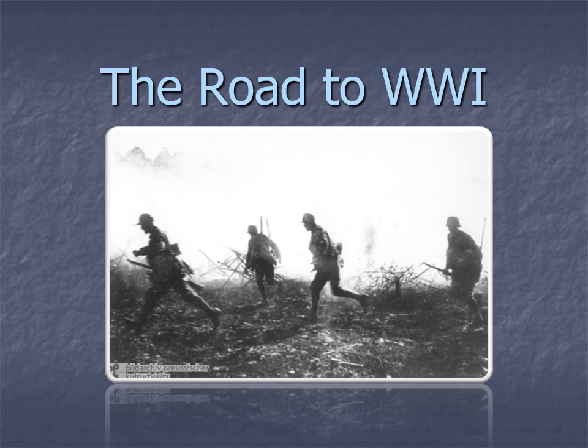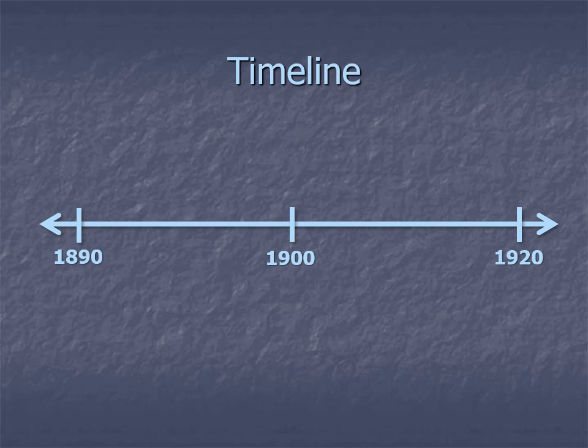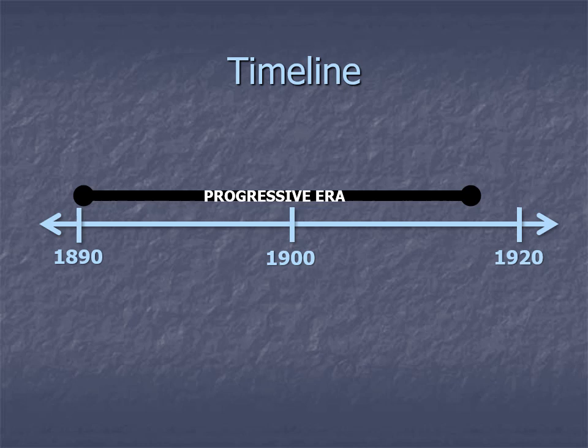It's important that we first understand something that's been going on with the last several chapters. There are a lot of repeated names and ideas, and there's a very important reason for that. The Progressive Era takes place right around the turn of the 20th century, from about 1890 almost up to the 1920s. The chapter we studied after that — imperialism — is actually going on at exactly the same time. Progressive Era is happening at home; imperialism is happening abroad. That's why in both chapters you heard names like Teddy Roosevelt.